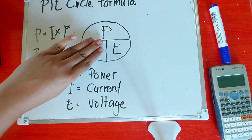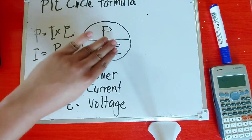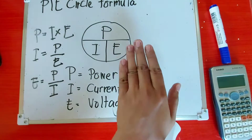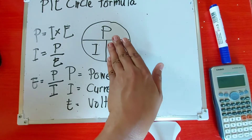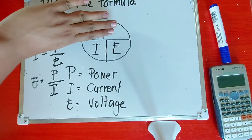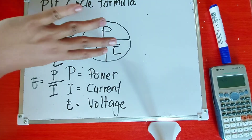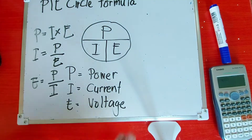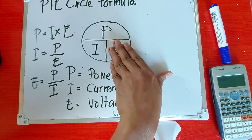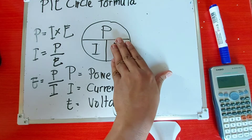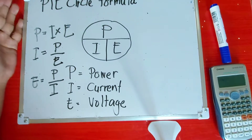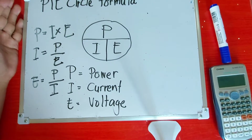Kung halimbawa I nawawala, P divided by E. Kung nawawala yung P, tatakpan mo lang, I times E. Kung nawawala naman yung E, P divided by I. So ganun lang siya.